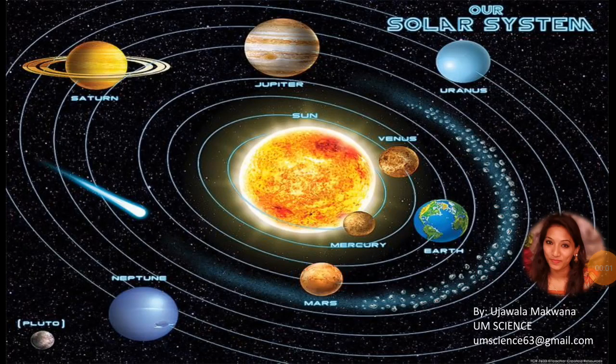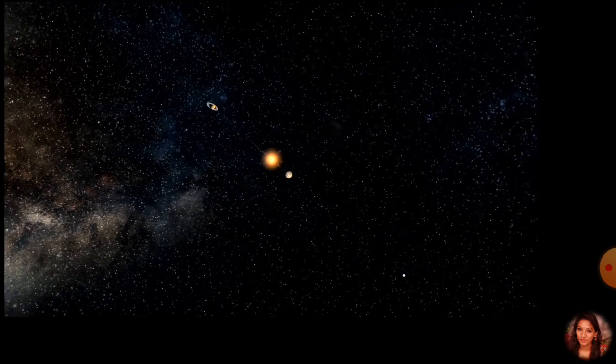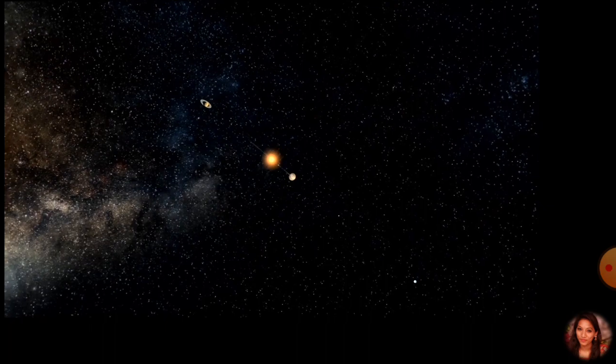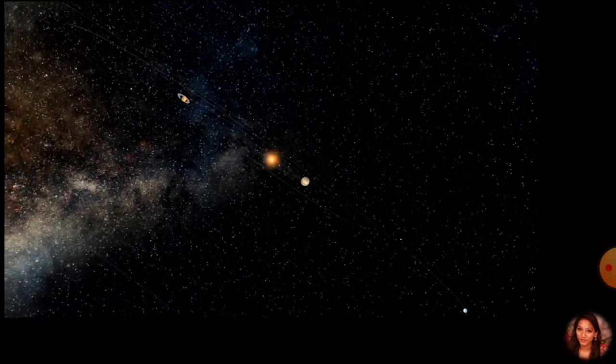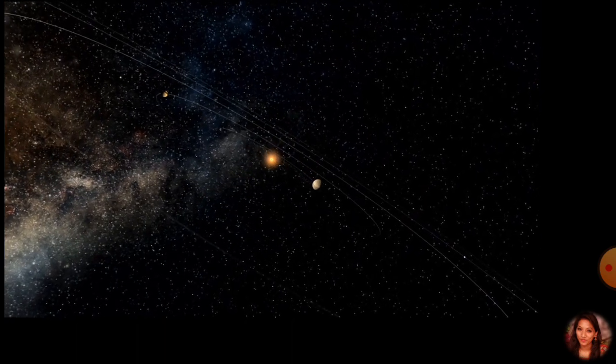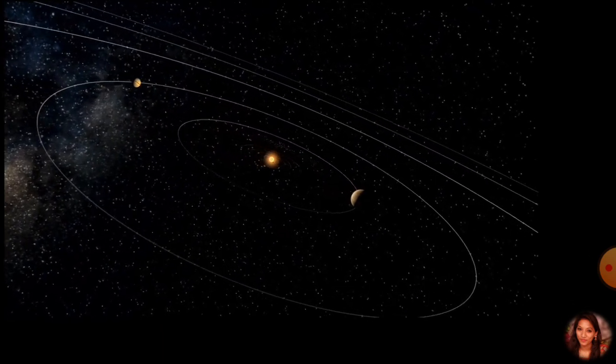Hello everyone, how are you? This is Ujwala, and today we are going to focus on what our solar system exactly is. Let us start. As we all know, the Sun and the celestial bodies which revolve around it form the solar system. It consists of a large number of bodies such as planets, comets, asteroids, and meteors.